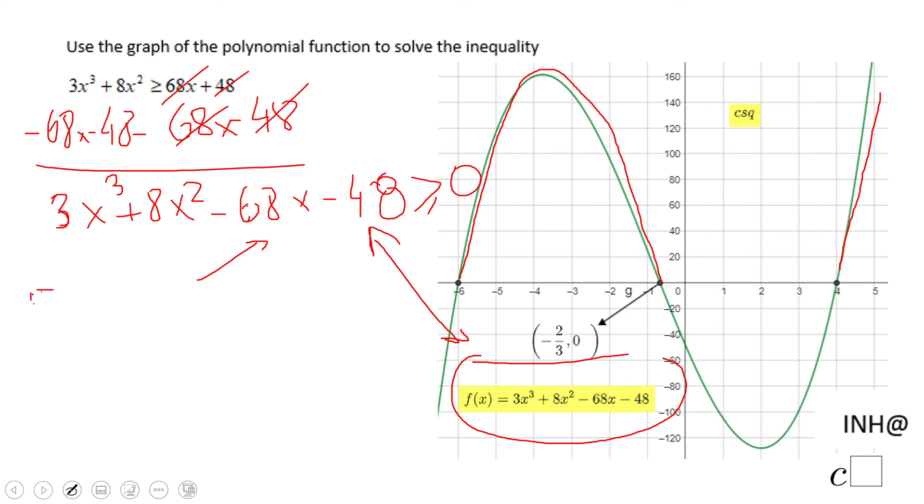Negative 6 to negative 2/3, and eventually union...